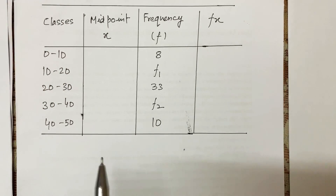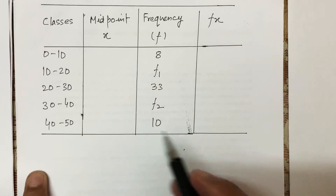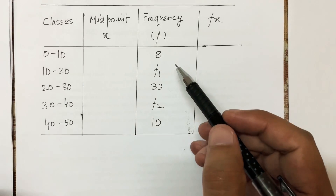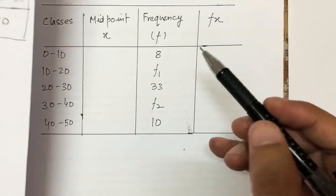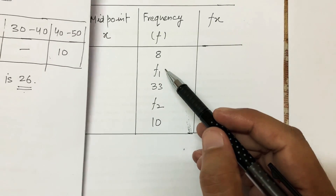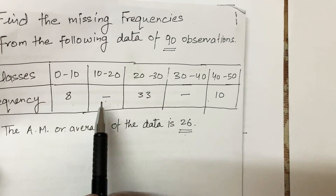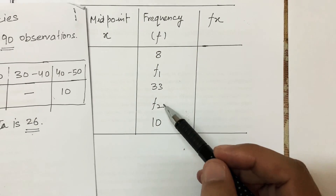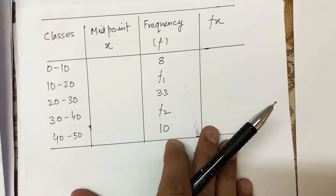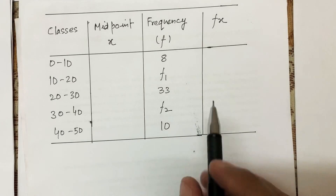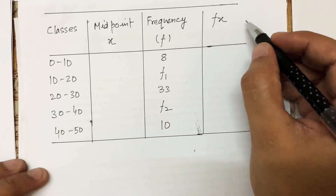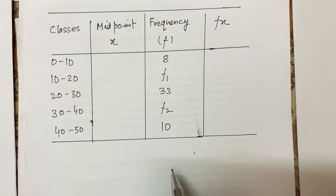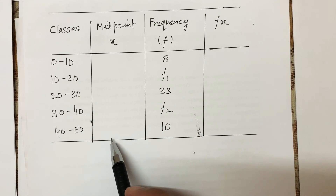I've put up the whole question in a tabular format. I have the classes and the frequencies. For the two missing frequencies, I've assigned symbols: 10–20 gets the symbol f1, and 30–40 gets the symbol f2. The known frequencies — 8, 33, and 10 — remain the same. First, I need to find the midpoints in order to calculate the arithmetic mean.